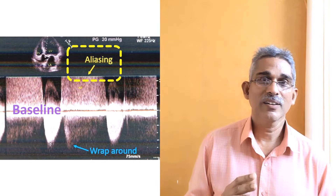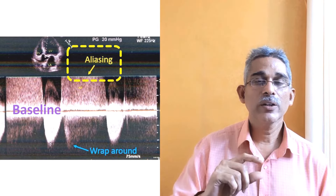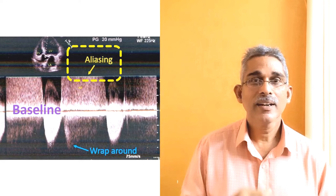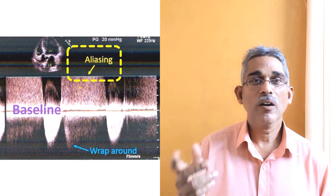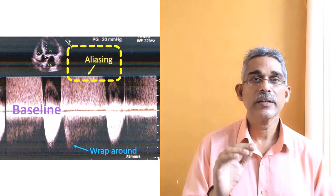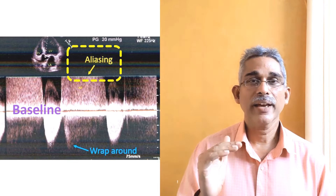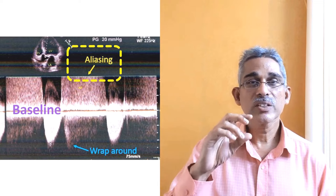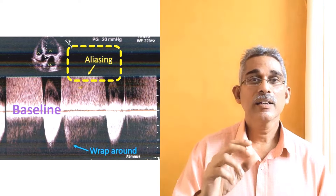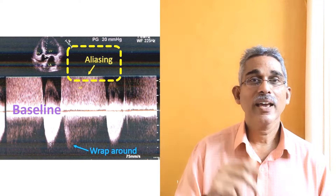In echocardiographs you can change the settings by shifting the baseline upwards or downwards or by increasing or decreasing the velocity ranges to manage aliasing. Once you get aliasing, either change the baseline or change the velocity limit so that you get a non-aliased signal on the screen before identifying the direction and maximum velocity of the signal.